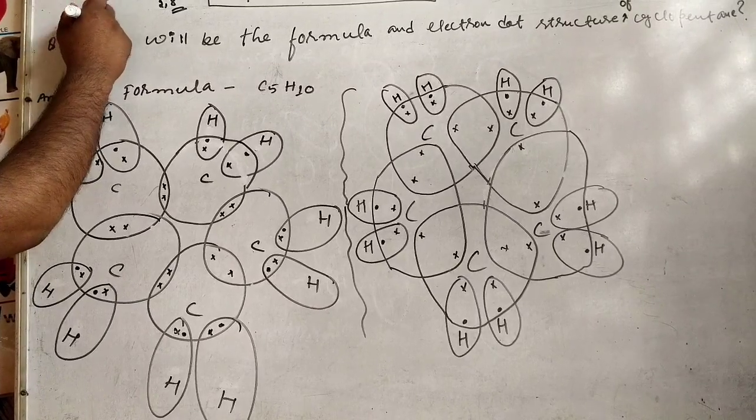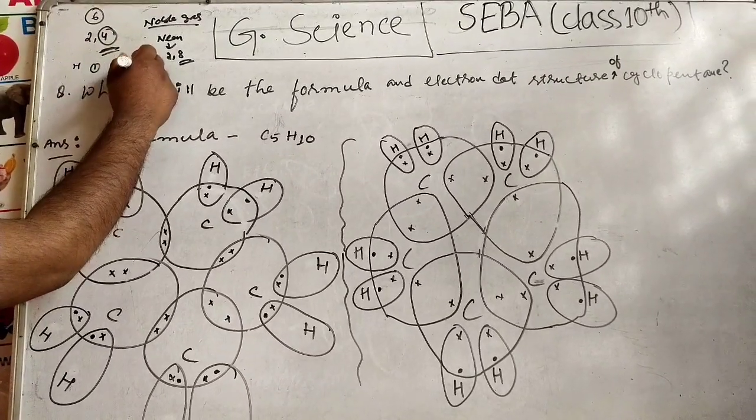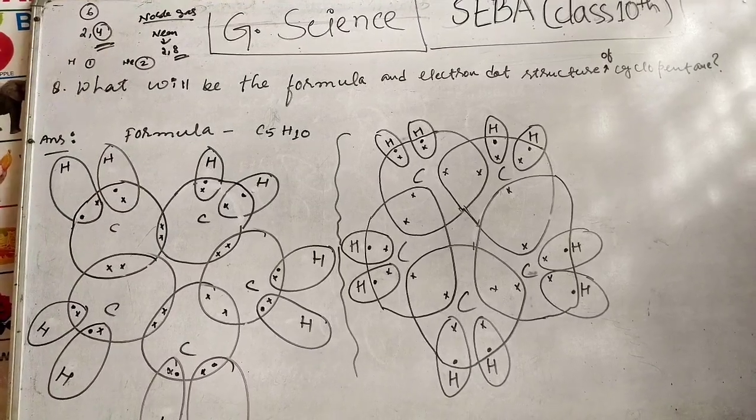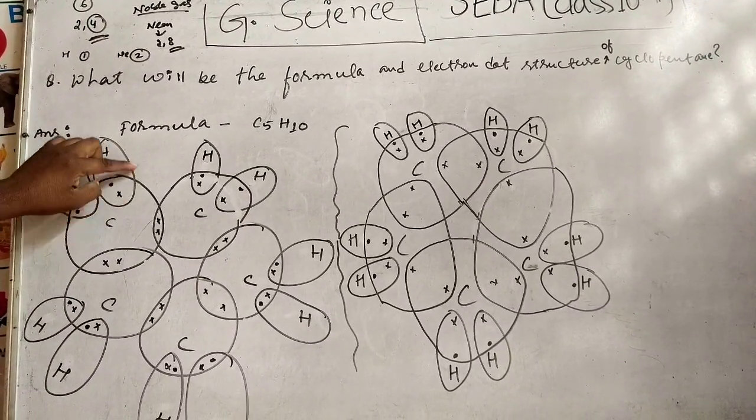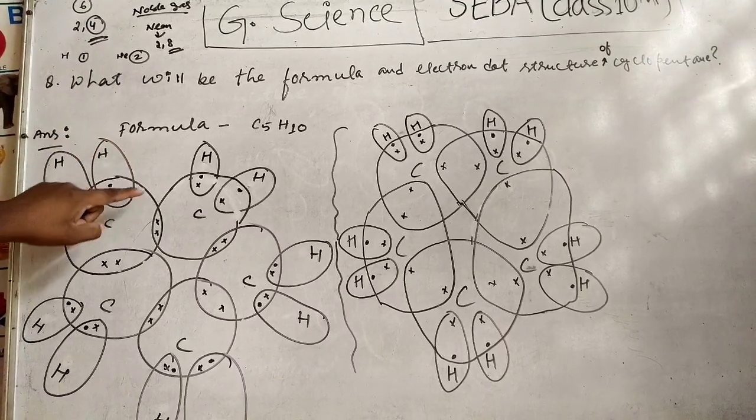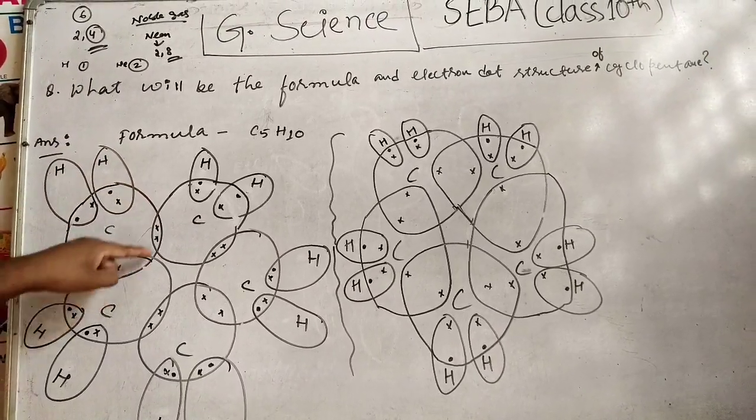Hydrogen's electronic configuration is one, so its nearest noble gas is helium - two. So hydrogen has to get two. See, two. This part is hydrogen and this part is the big circle, carbon.